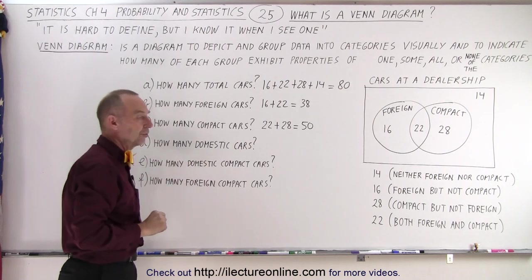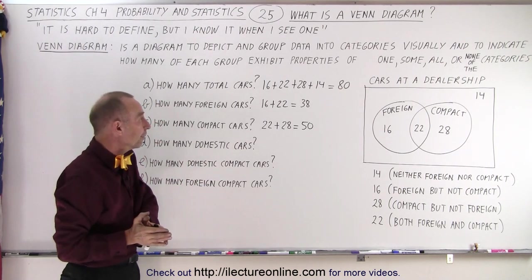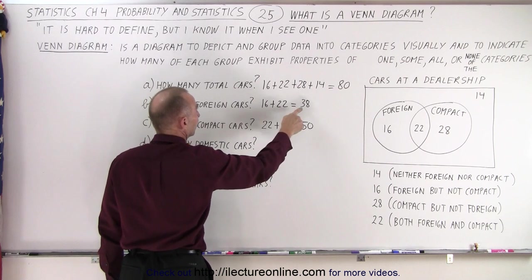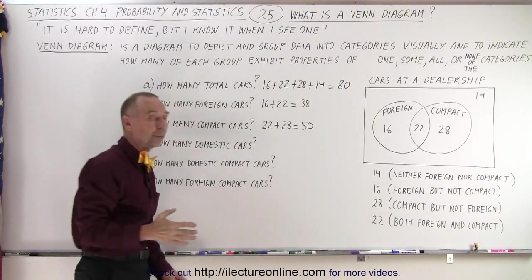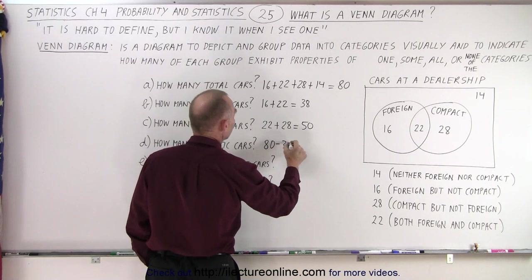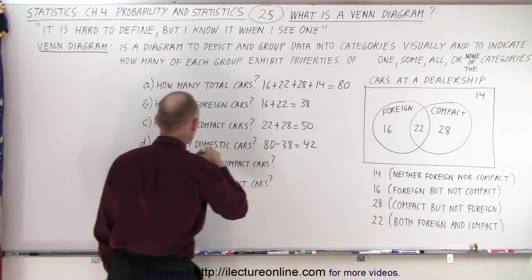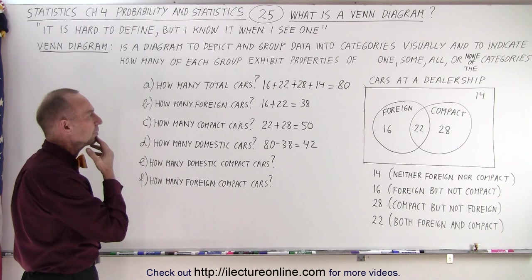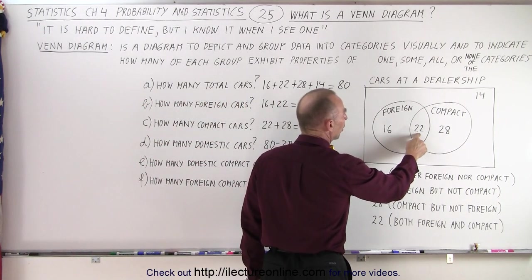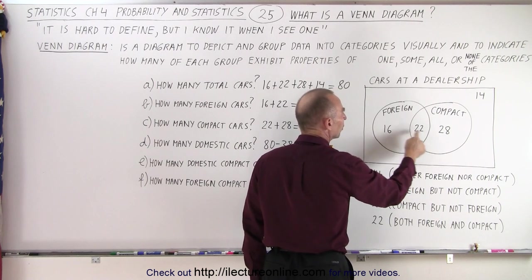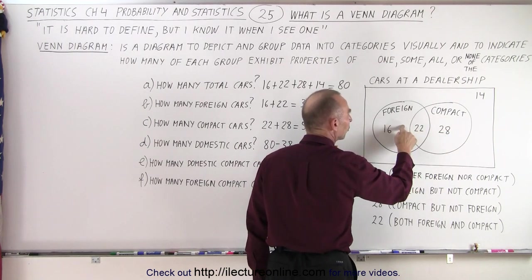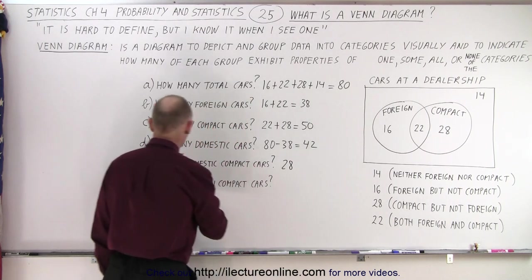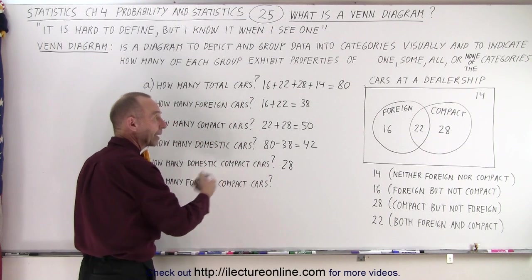How many domestic cars? Well, you can either have a domestic car or a foreign car. If we know the total number of cars and the number of foreign cars, subtracting gives us the number of domestic cars. So 80 minus 38 equals 42 domestic cars. How about domestic compact cars? The 28 are compact cars that don't belong to the foreign circle, so therefore they must be domestic — 28 represents domestic compact cars.